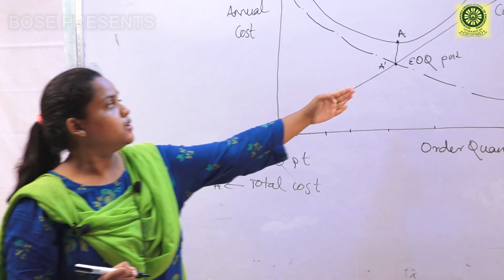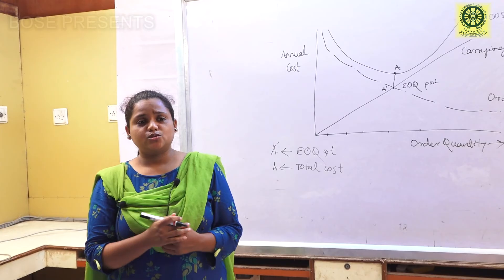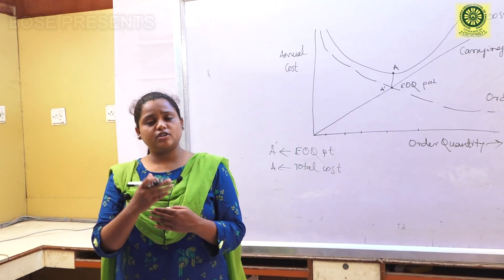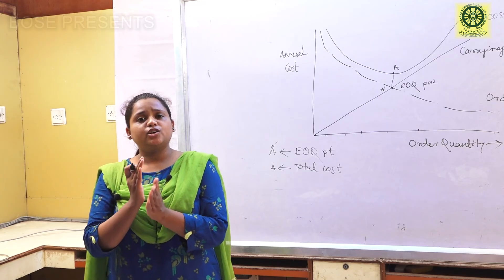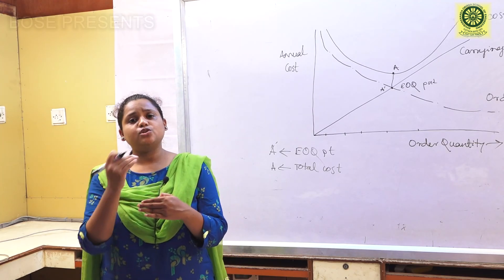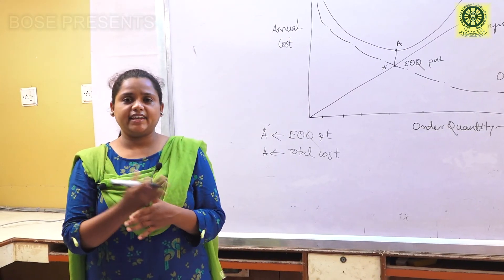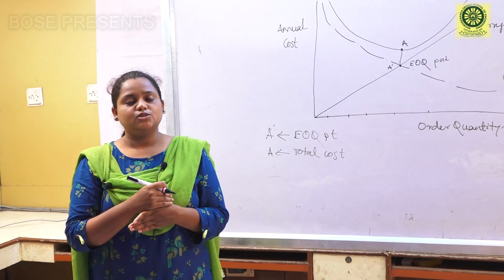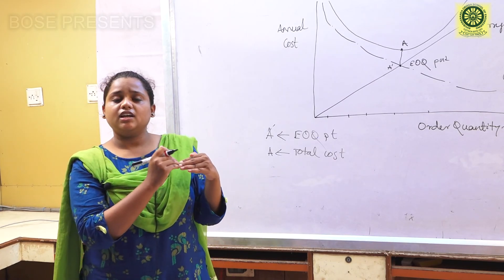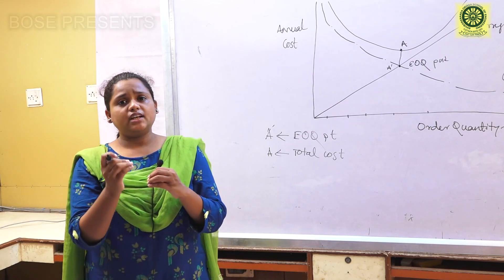Point A represents the minimum total cost for placing and carrying our order. EOQ is the optimum quantity that must be purchased at a single time so that the cost is economically feasible for that company. By using this Economic Order Quantity model, we can calculate the optimum quantity to purchase at a single time so that we can minimize the total annual cost. Carrying cost and ordering cost together form this total cost.